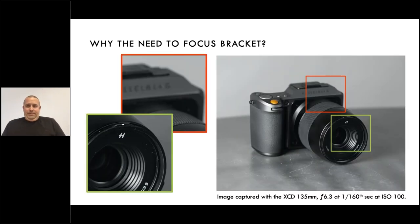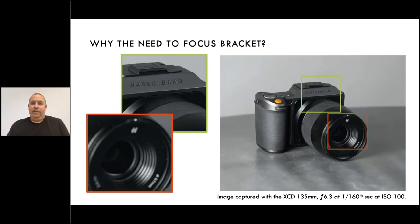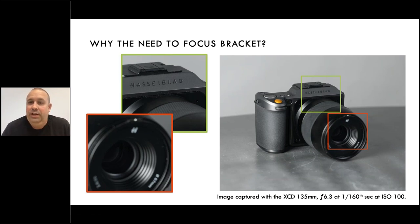Looking at this image — the setup and subject we're using for today's webinar — when focusing on the front of the lens in the green square, the lens is in focus, but the depth of field at our chosen aperture doesn't extend back far enough to capture the rear of the subject in focus. You can see in the red square how part of the Hasselblad logo is out of focus. Likewise, if we then focus on the rear of the subject, then the front of the object is not in focus. This is a good example of where it is not possible to get the whole subject in complete focus with just one image.